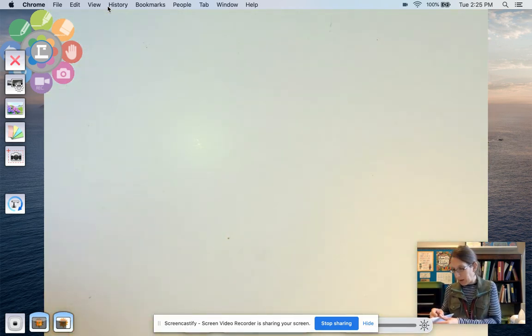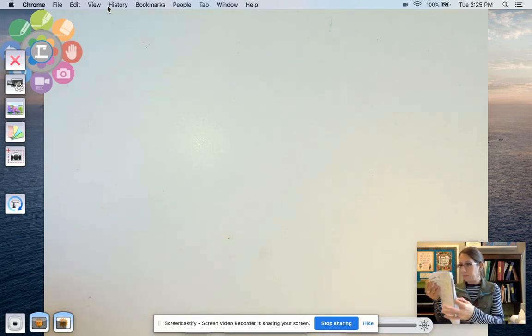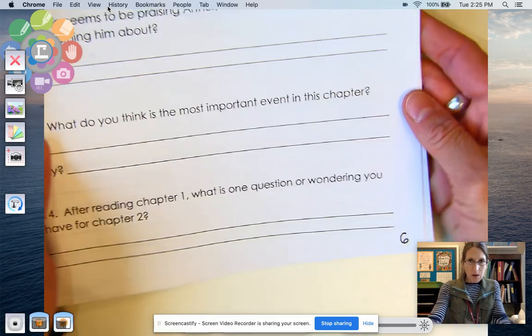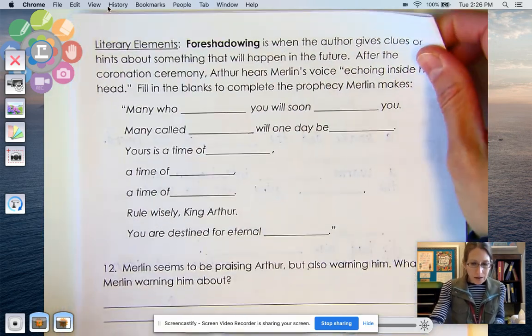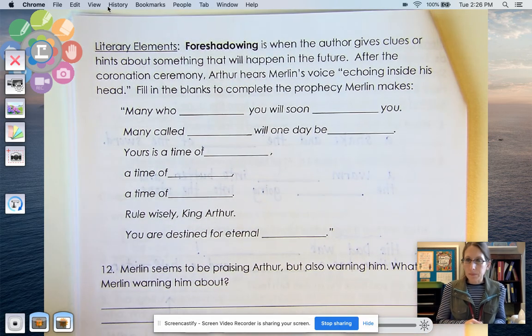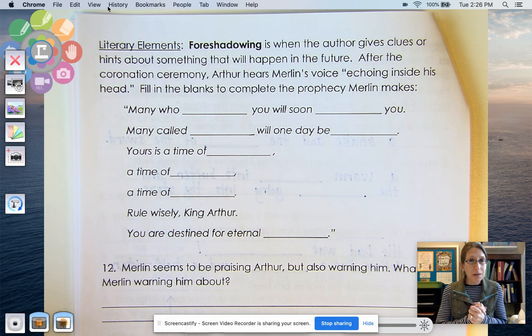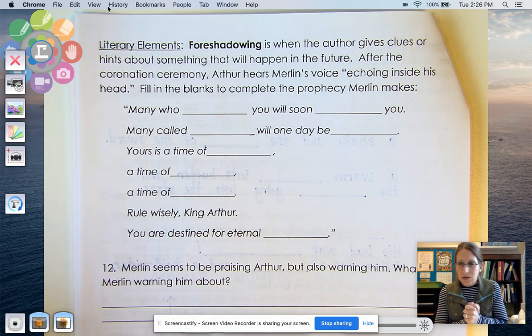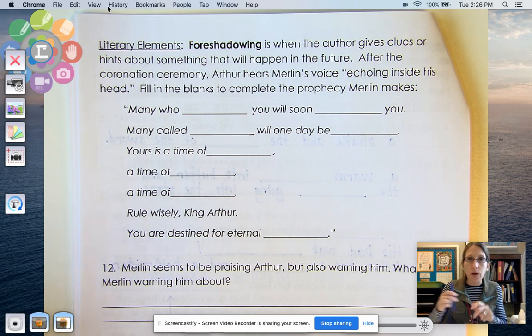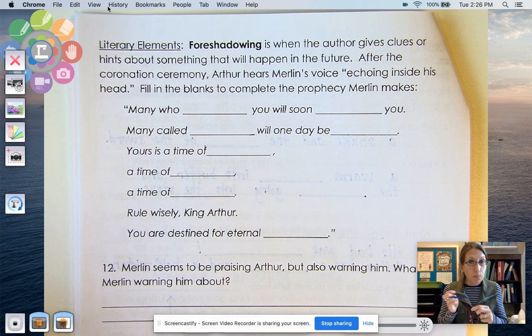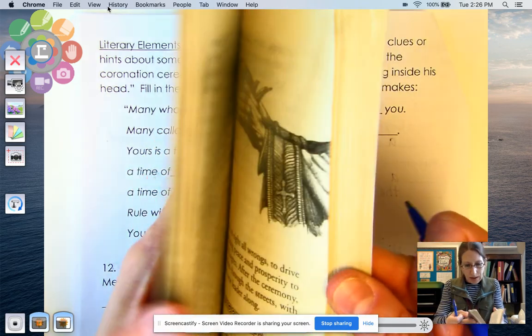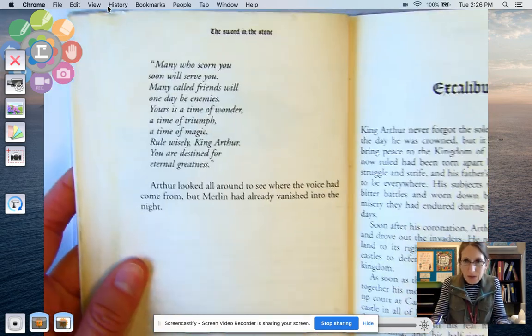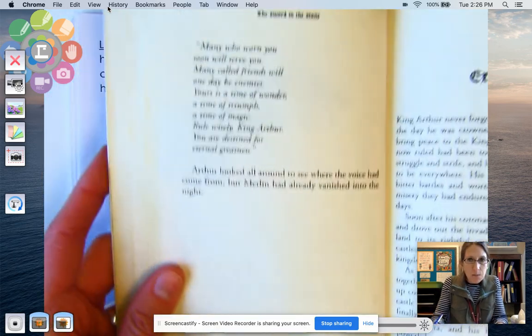And then what I would like you to work on, this is kind of your work to do, is page six. So on page six, this is what I would like you to do for the rest of your reading time today. So here we have some literary elements foreshadowing. And that is when the author gives clues or hints about something that will happen in the future. So after the coronation ceremony, Arthur hears Merlin's voice echoing inside his head. Fill in the blanks to complete the prophecy Merlin makes. Hmm. I can give you a little hint. The text evidence for this is on page 23. So I would recommend you take a look at the very end of the chapter. Oops. Not 23. 24. On page 24. That's the very last page in the first chapter.